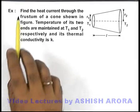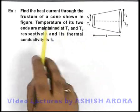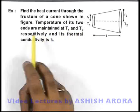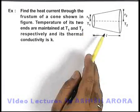In this example, we are required to find the heat current through the frustum of a cone shown in the figure. We are also given that the temperature of its two ends are maintained at T₁ and T₂ respectively, and its thermal conductivity is k.